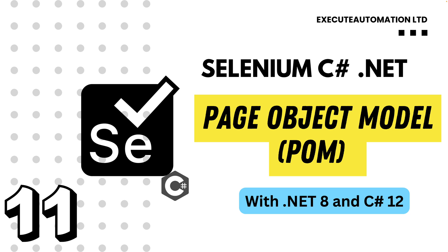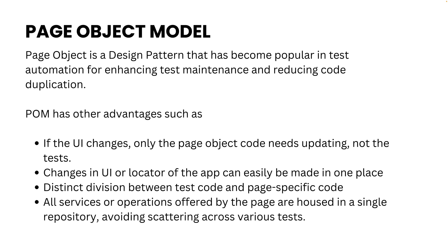Welcome to the next lecture of our course Selenium with C-Sharp .NET. In this lecture we'll be talking about page object model in Selenium. Page object model is a design pattern that has become popular in test automation for enhancing test maintenance and reducing code duplication. This is the major theme of page object model, and it is one of the most important concepts to understand while working with Selenium automation testing.